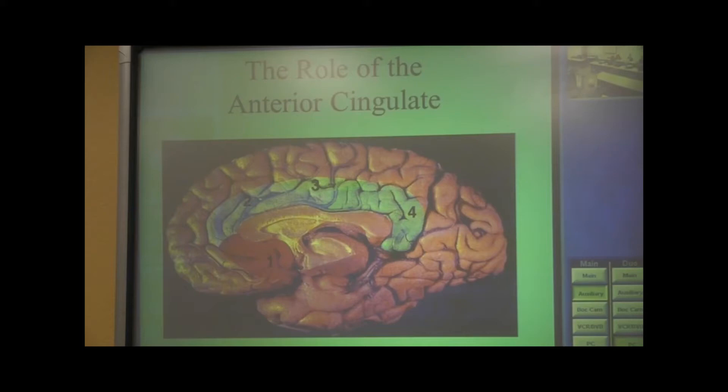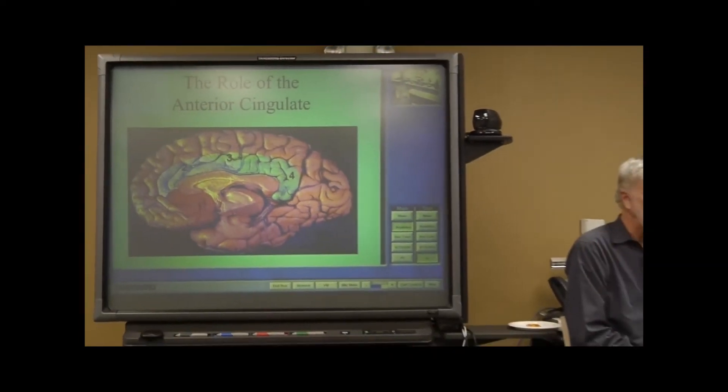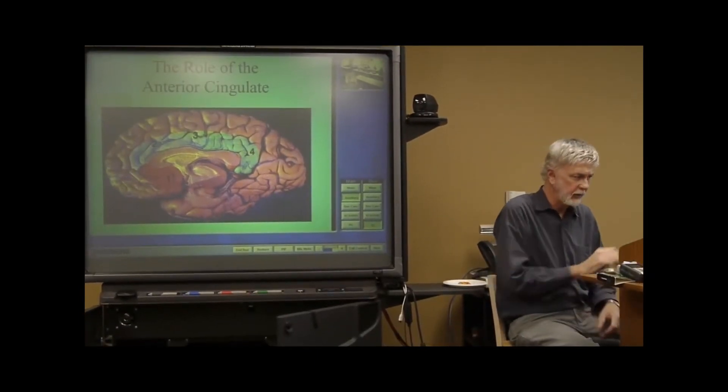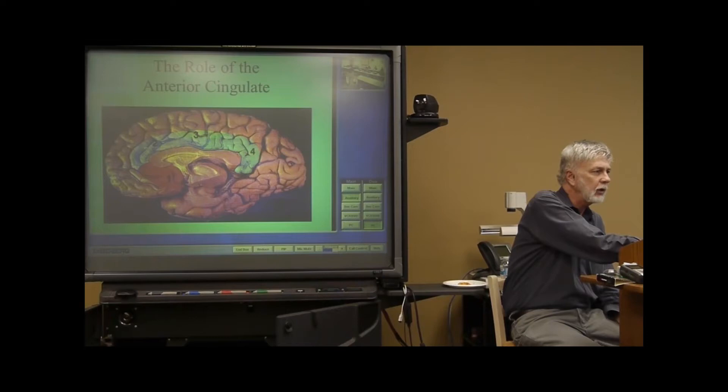And I had mentioned there are three primary brain structures in the limbic system that I want all of you to know, and this is one of them. And so there are a multitude of different kinds of functions that are associated with different parts of the cingulate. But we're looking here at the anterior cingulate, and the front of the brain, and we're looking at this area right here.